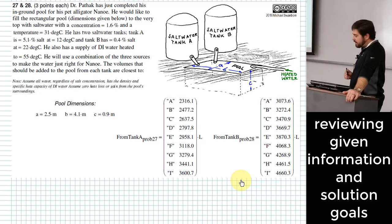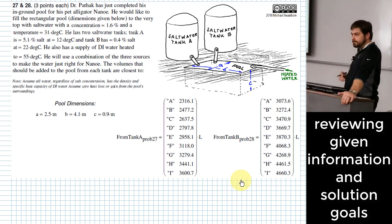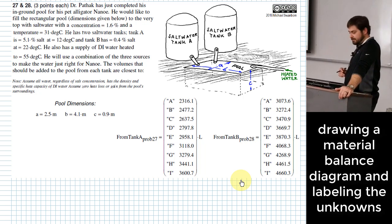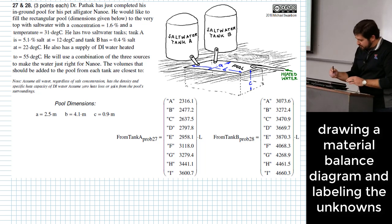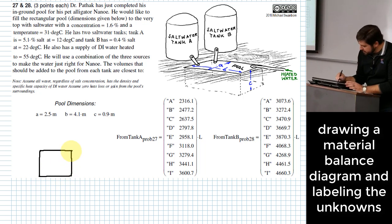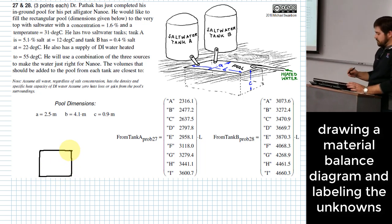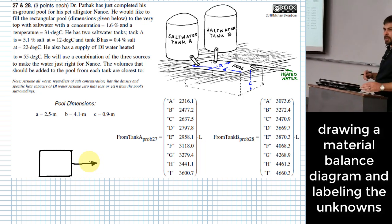What he wants to do is use a combination of those three sources so that he can fill up the pool to the concentration of salt water and the temperature that is Nano's favorite composition. So what he needs to know is the volume from tank A and the volume from tank B that will fill up the pool. Where do you think we should start with this problem?